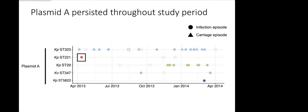We see single instances of ST221 and ST5822 both of which carry plasmid A. Then what we see is about halfway through the study we see the emergence of ST29 that's now carrying plasmid A. So we hypothesize that ST323 has donated its plasmid to ST29 and this is our first instance of plasmid transmission into a new strain.